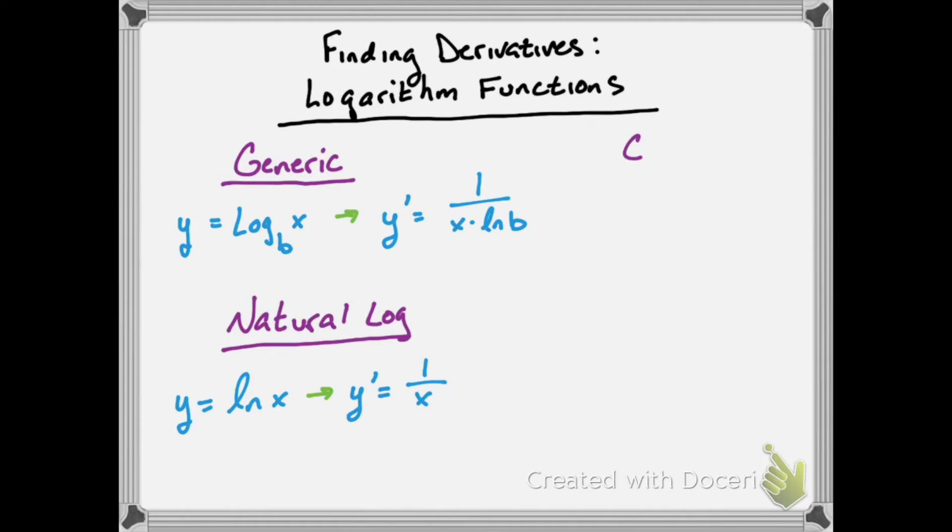We have to remember to use the chain rule too, this will come up often. If we have y equals the natural log of u, for example, its derivative is going to be 1 over u times the derivative of the inside function, which would be times u prime.